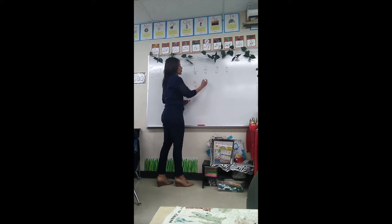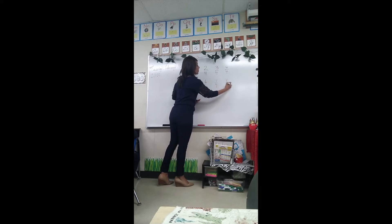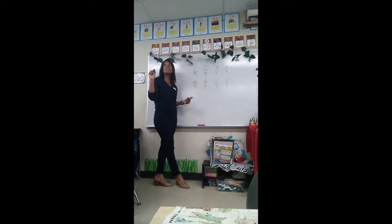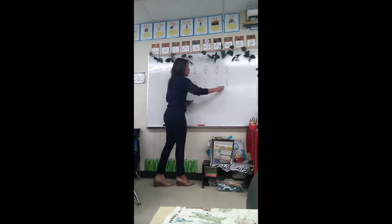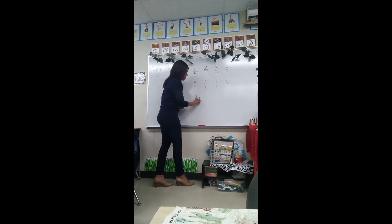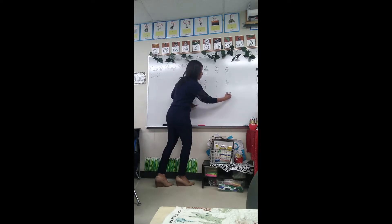We're counting fourths. Six-fourths, seven-fourths, eight-fourths, nine-fourths. Let's pause — remember I said don't count faster than I can write, so let's stay together. Nine-fourths, ten-fourths, eleven-fourths, twelve-fourths. Let's pause.